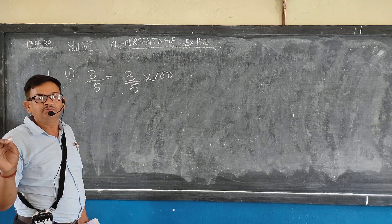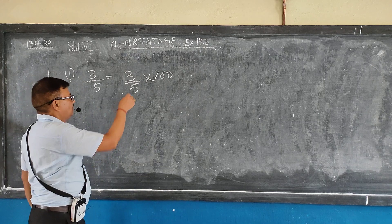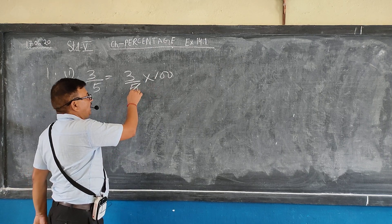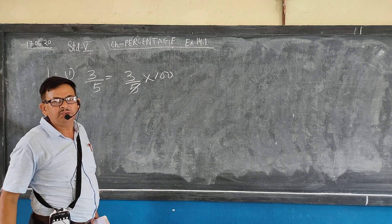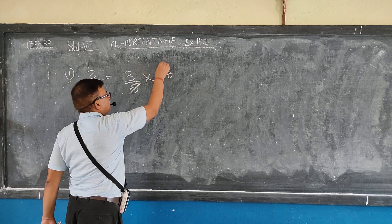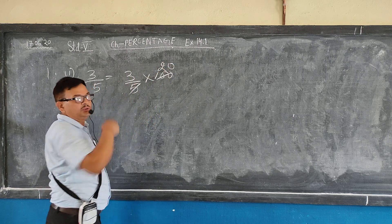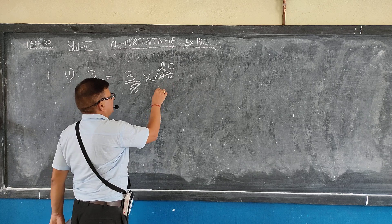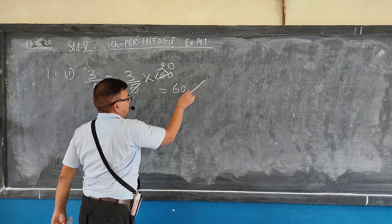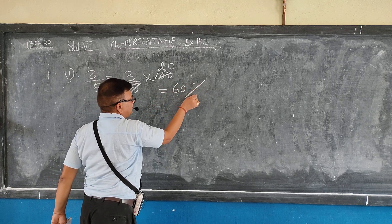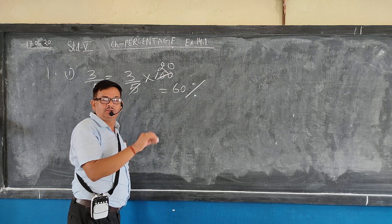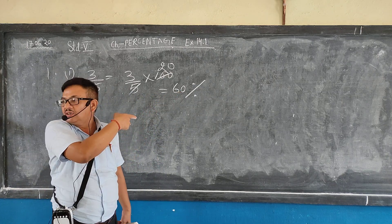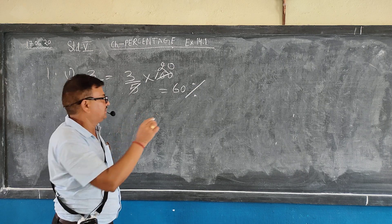Now divide 100 by 5 — when you divide 100 by 5, it becomes 20. Then 20 into 3 gives the product 60%. Give the percentage sign. Since the question says change into percentage, you must give the percentage sign — this is the symbol of percentage.